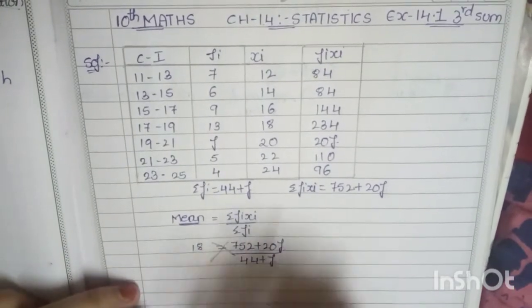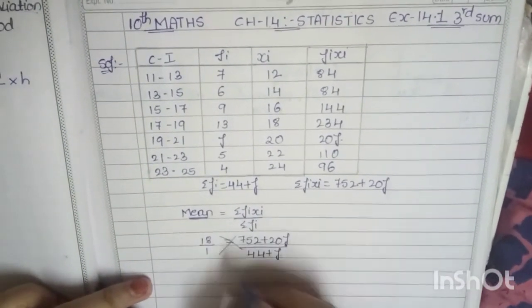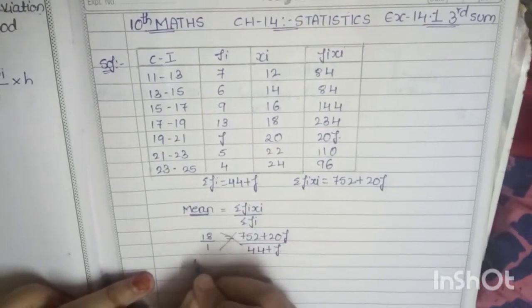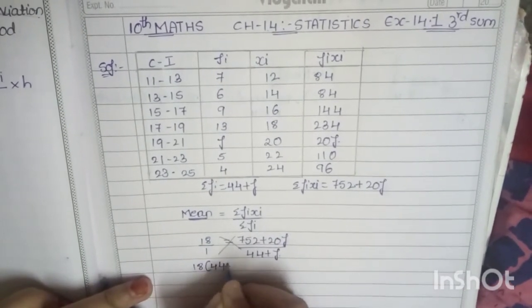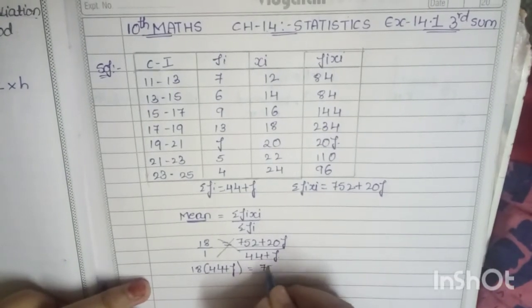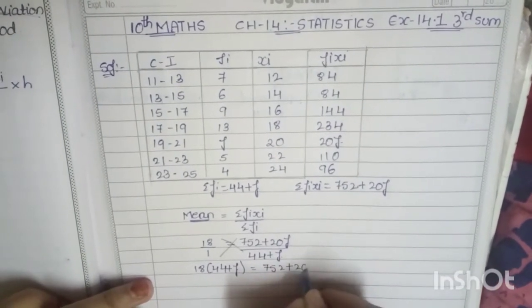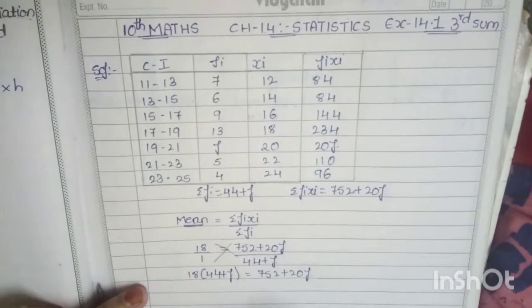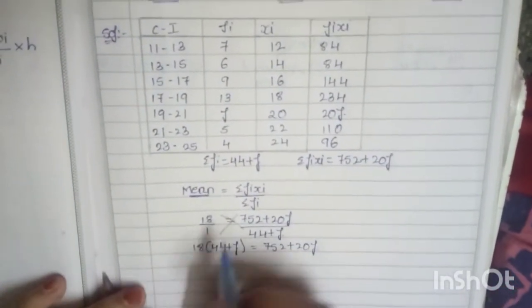As there is equal sign in between, we can just cross multiply the given values. So this will be 18 by 1. On multiplying you get 18 into 44 plus f equals 752 plus 20f into 1.